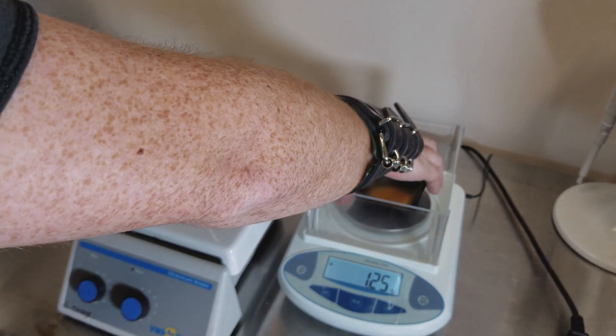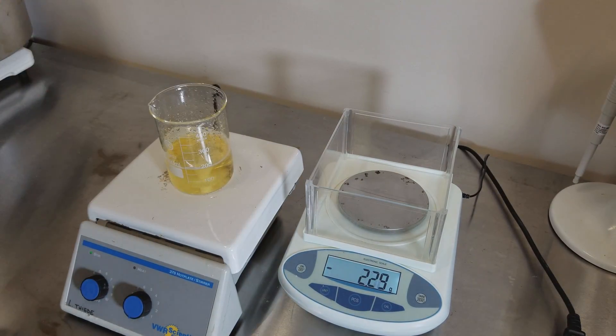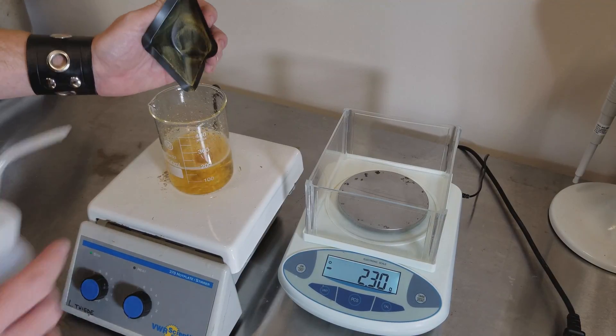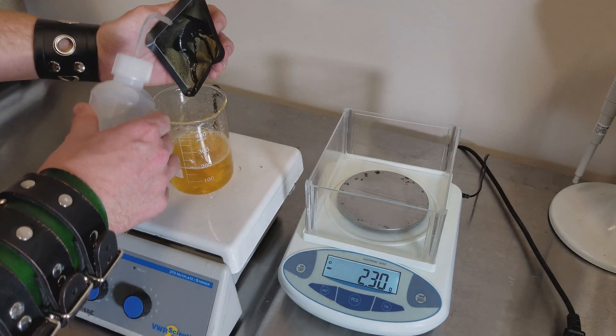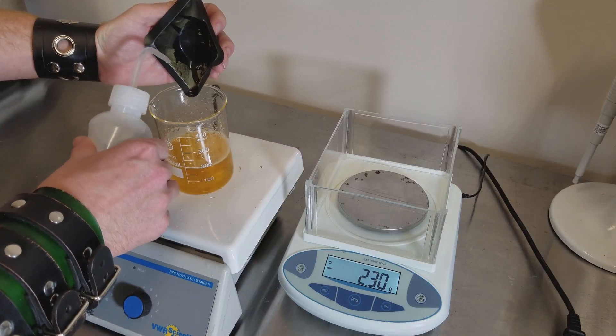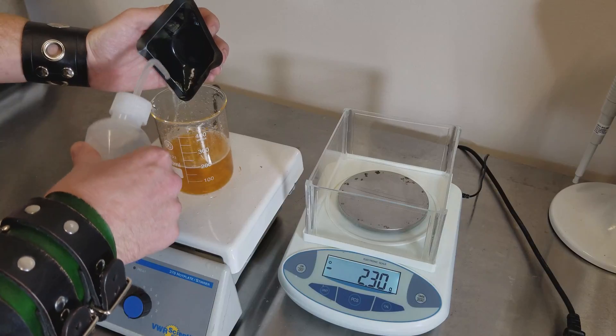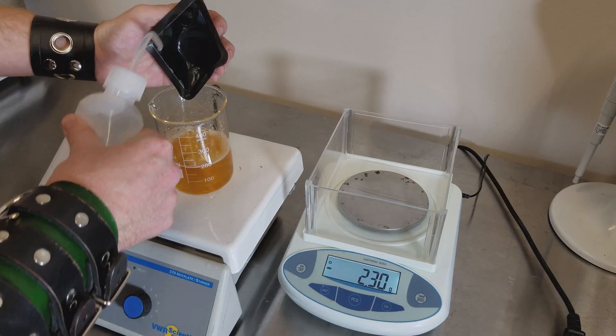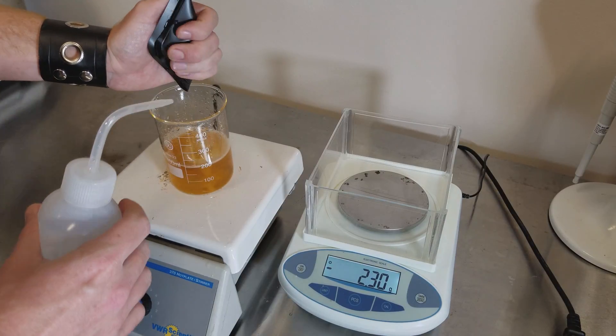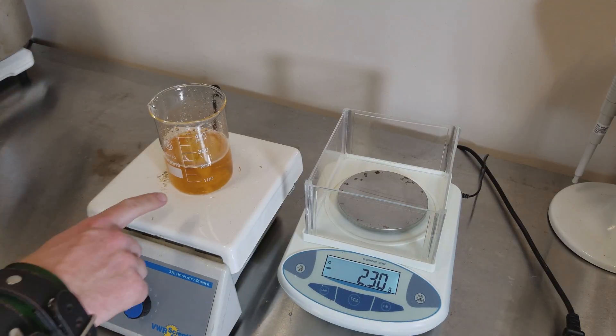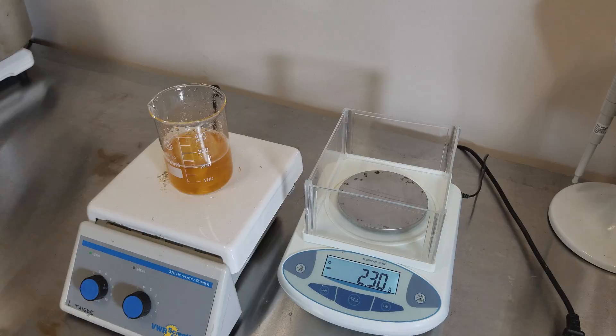Same technique: fold it in half, dump it in, wash down the remaining. Let that mix up. As you can see, we're quickly approaching 200 milliliters. We don't want to go over 250.